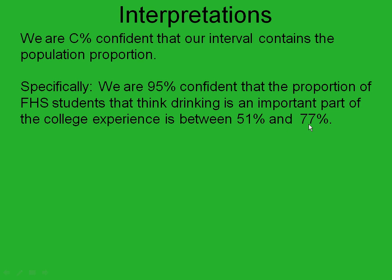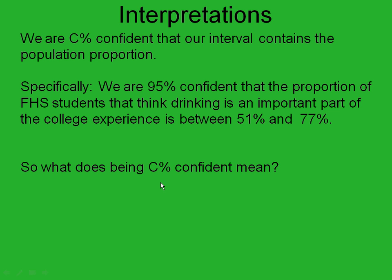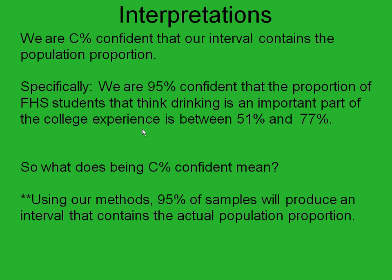Now this is a little wide, so we could go down to 90 percent confidence and that would shrink this — maybe bumping it up to something like 56 percent to 72 percent — to be a little more precise. But at least we are confident that we have contained what Fairview High School thinks about this question. If we were wondering if it was the majority or not, our result shows that the majority of Fairview High School students — especially juniors and seniors — think yes. You should be asking: what does 95 percent confident actually mean? Using our methods, 95 percent of the samples we would take will produce an interval that contains the actual proportion we're looking for.